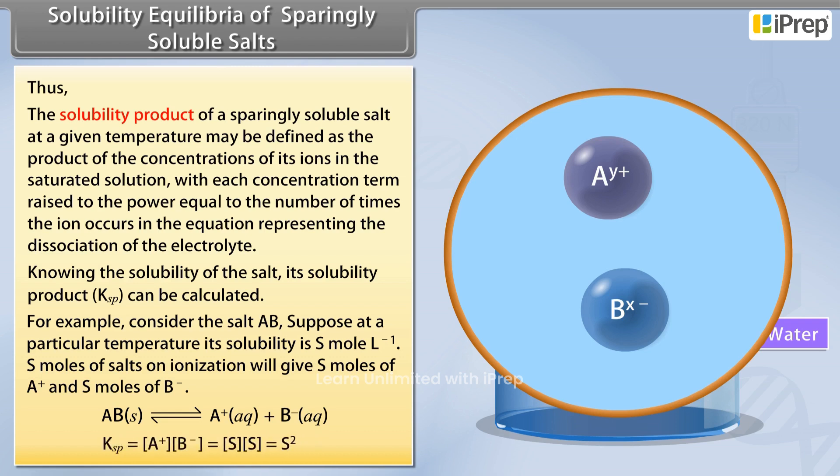K_sp is equal to concentration of A^+ into concentration of B^- is equal to S into S is equal to S squared.